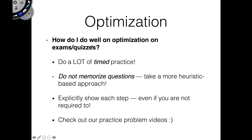I'd like to quickly talk about how to do well on optimization problems on exams and quizzes. Especially if you're taking this class at university level, like the one that I'm a TA for, you will see optimization as kind of a big problem. These can be pretty difficult to tackle sometimes, so I wanted to give you some advice on how you can do well on these kinds of problems.